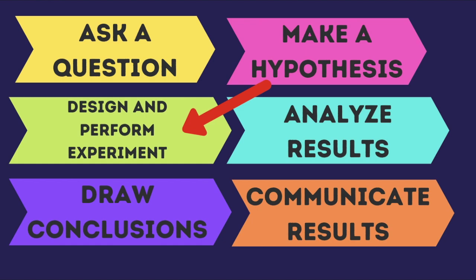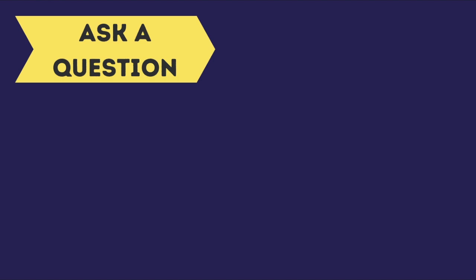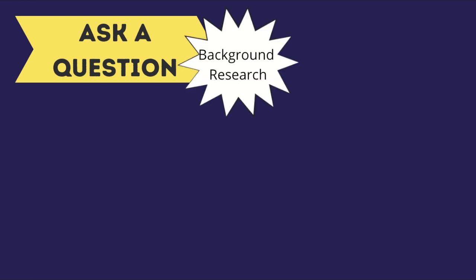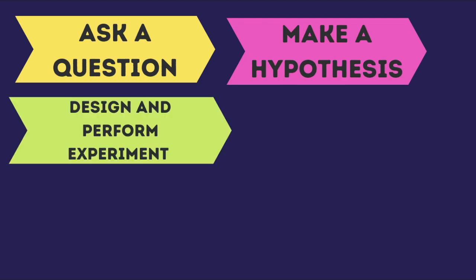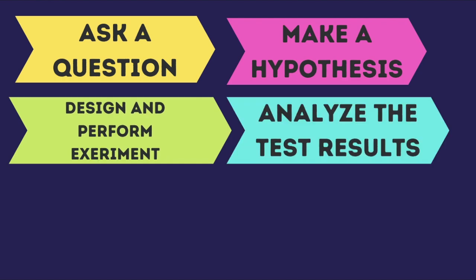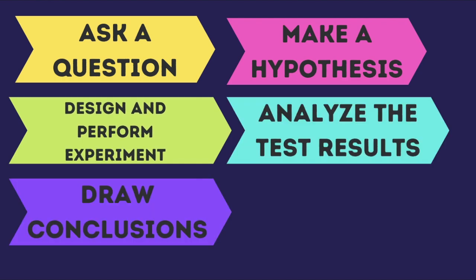So just to review, the scientific method begins with a question or observation. Then after some background research you will make a hypothesis — your prediction or what you think will result from your experiment. Next you will design and conduct your experiment. Then you will analyze your data, draw conclusions, and share what you learned with others.